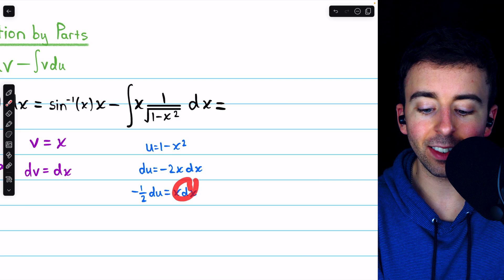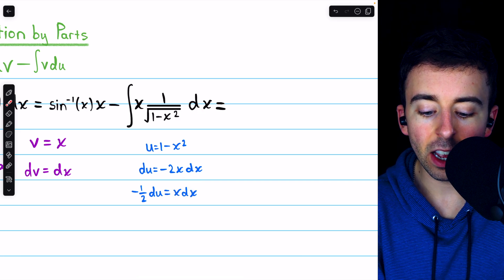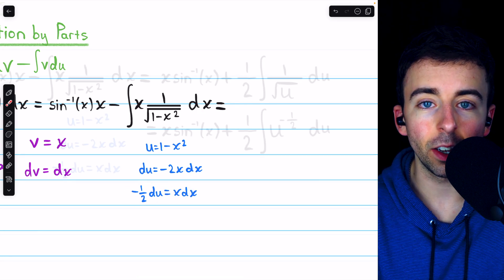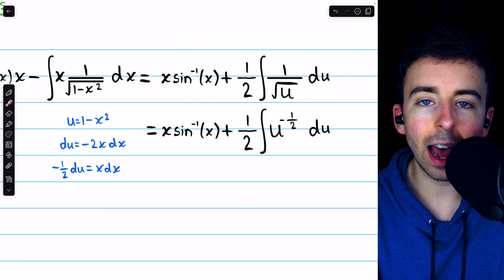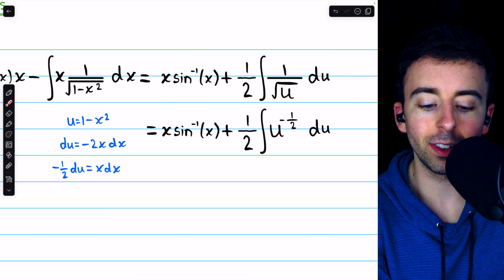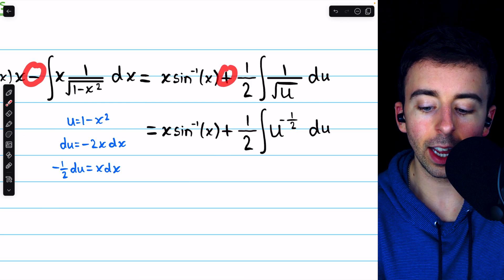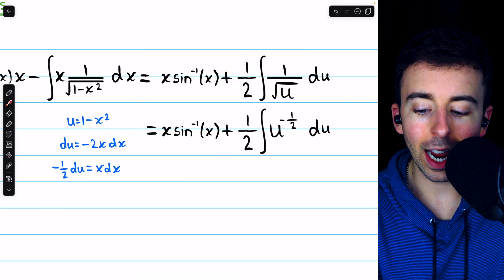So x dx then, we'll be able to replace with negative half du. That gets us here. We bring the factor of negative half out of the integral, which turns this negative into a plus, and then there's the one half. And then in the integral,